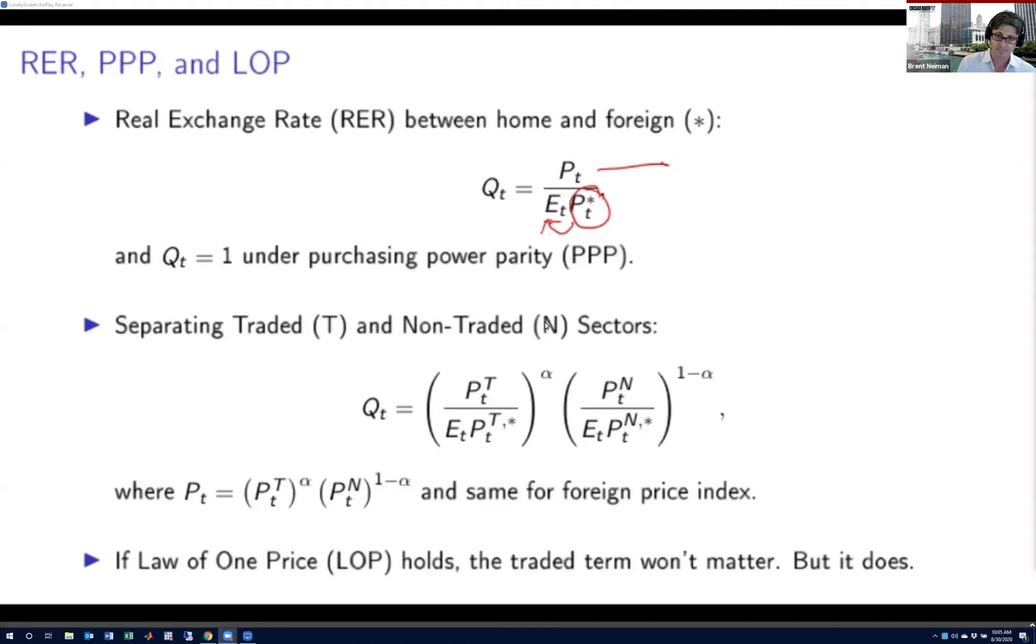Most basic theories that you covered as undergrads try to put structure on the determinant of this real exchange rate by separating goods into traded and non-traded goods. If you do so under the assumption of Cobb-Douglas preferences over those traded and non-traded goods, you get a price index of the kind that I'm circling here on the slide. You can inject that back into the initial equation and divide the real exchange rate into a traded component and a non-traded component.